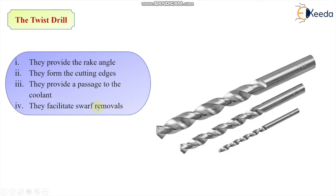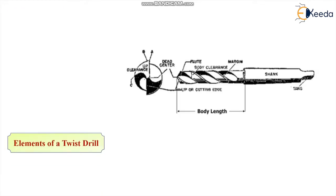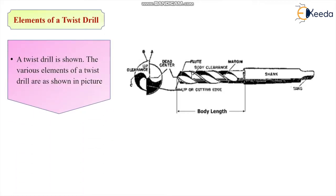The flutes provide the rake angle, then they form the cutting edges, they provide a passage for the coolant, also they provide the passage for the removed chips or facilitate the swap removal. Now you can see here this drill, a twist drill, the various parts are shown here. This is the body of the drill, this is the shank, and you can see here the helical grooves and this is the flute, this is the lip of the drill, this is the dead center.